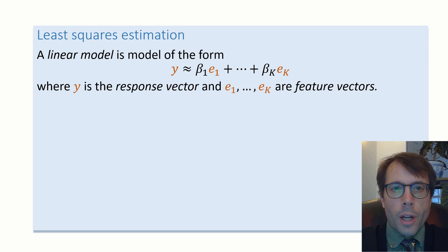So what we've seen is a linear model is a model of the form y approximately equal to beta one e1 plus dot dot dot plus beta k ek, where y is the response vector, and e1 up to ek are feature vectors.